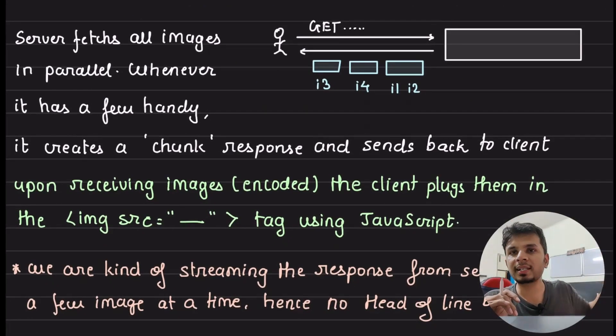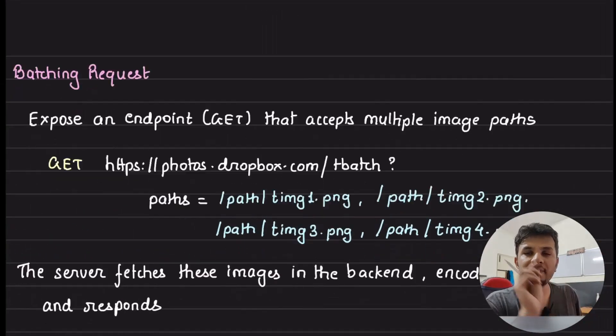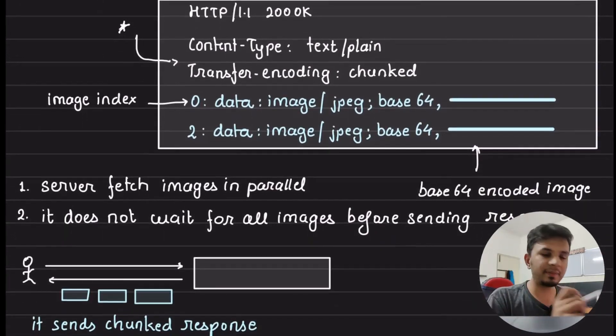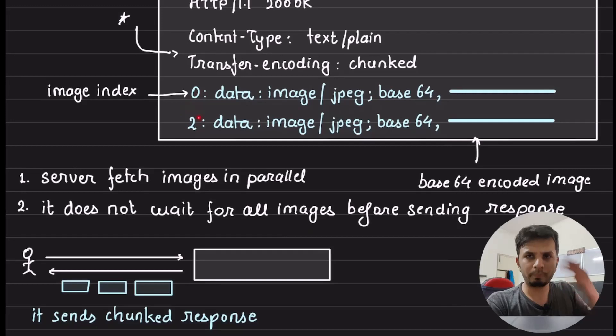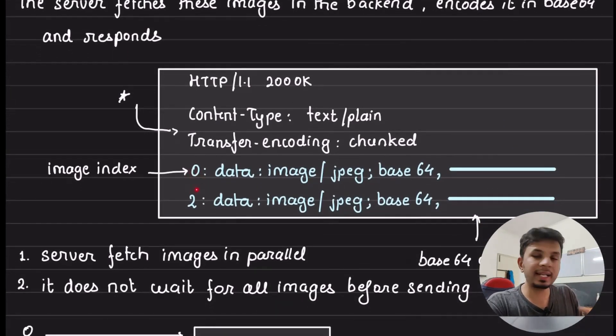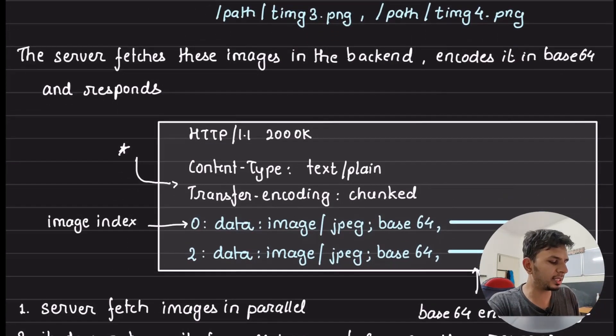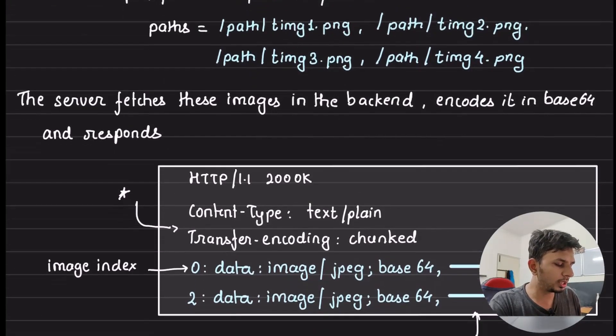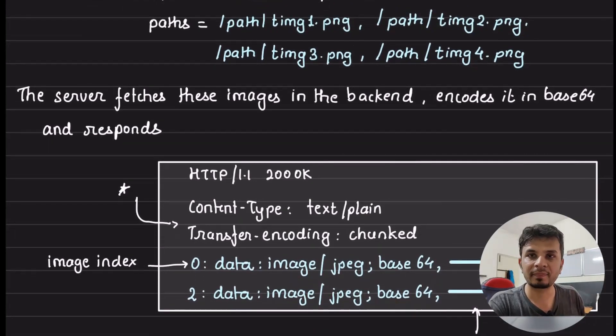Once these images are received on the client, or these responses are received on the client side, how is every single response looking like? Every single response has, like every response has multiple lines. Each line contains an index. For example, if I send request for t1, t2, t3, t4, image1, image2, image3, image4. I would send that, hey, for index 0, which is the first image, this is the base64 encoded thing. For index 2, this is the base64 encoded string.